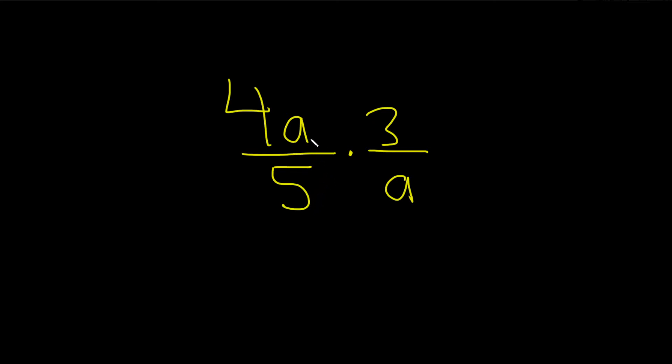We have to multiply these fractions. We have 4a over 5 times, the dot means, 3 over a. Whenever we're multiplying fractions like this, things on the top can cancel with things on the bottom. None of the numbers have common factors, but the a's are the same, so we can cross this one out and cross this one out.